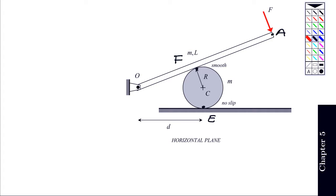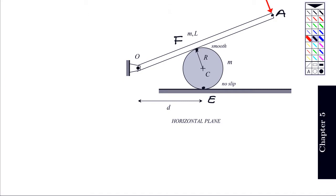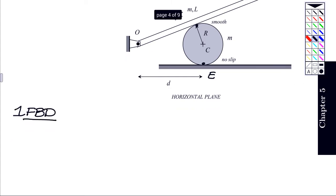What we want to do is find the speed of C once the center of the disc has moved an additional distance D to the right. We're looking for speed for change in position, so the work energy equation would be the obvious choice, and we know with the work energy approach that we want to make the system usually as large as we can.